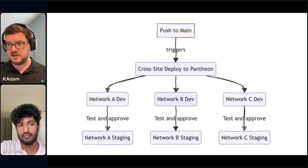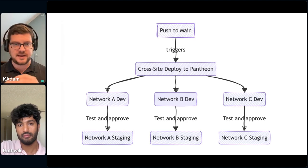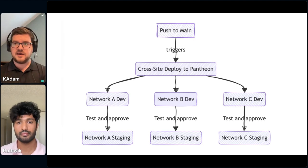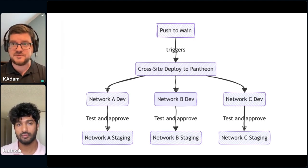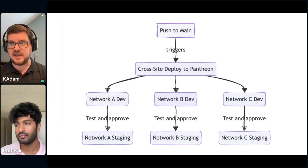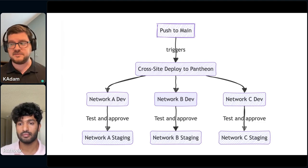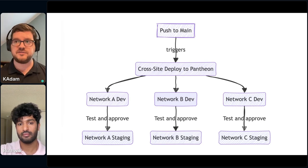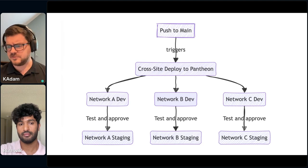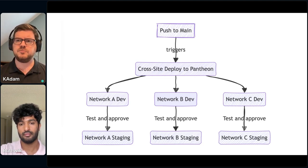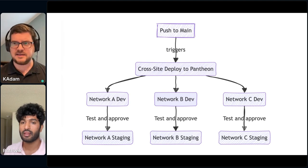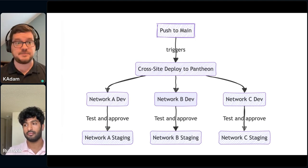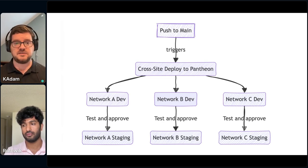The way we deployed on Pantheon was to take one repo and push to each individual network. As Ruthwick mentioned, the Red project covers hundreds of sites split across multiple Pantheon site instances and multi-site networks. There are two ways to manage those within Pantheon: a custom upstream repository that each individual site uses as its base, or pushing code directly to each site. We chose to push code directly, which reduced the number of repositories in play and kept more branches inside the main UIC web project structure.